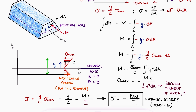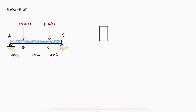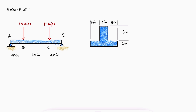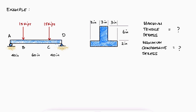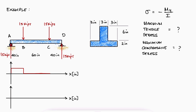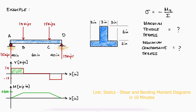Let's put everything we learned here today into practice with a simple example — remember that there are more complex normal stress due to bending examples from this main video linked in the description below. Two vertical forces are applied to a beam of the cross section shown. What are the maximum tensile and compressive stresses in portion BC of the beam? Remember to try this on your own before watching the solution. To find these normal stresses due to bending, we will use the expression we developed today. The moment value for section BC can be easily found by finding the reactions at A and D and plotting shear and bending moment diagrams.